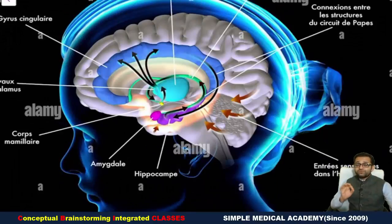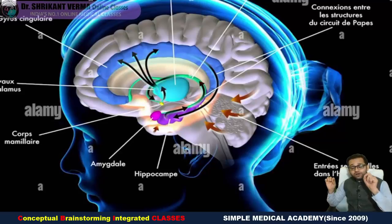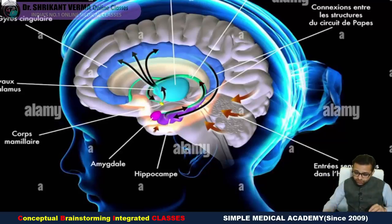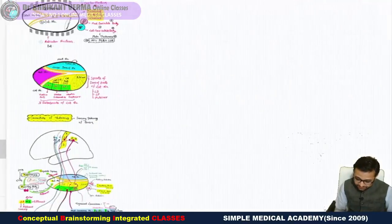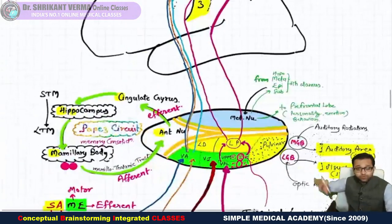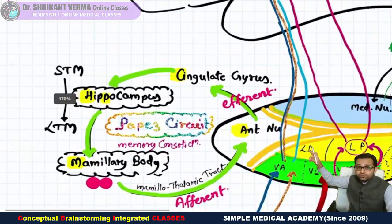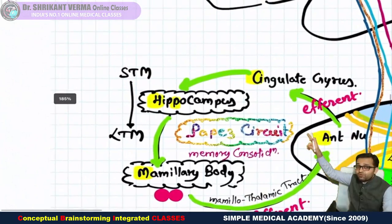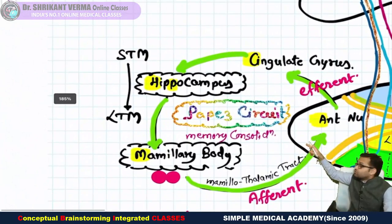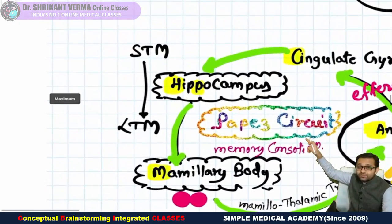One very short and sweet discussion we are going to do here in this video for our Papez circuit. I told you in our videos what is the Papez circuit. Here in the portion of the connection of the thalamus: the anterior nucleus of the thalamus, cingulate gyrus, hippocampus, mammillary body, then again the anterior nucleus of the thalamus — this is our Papez circuit.